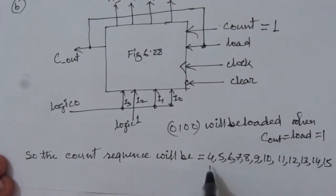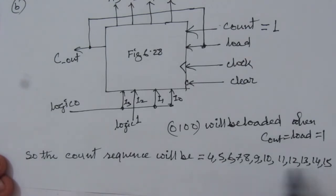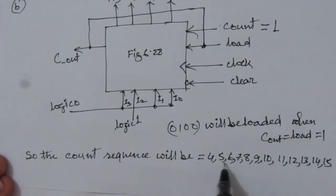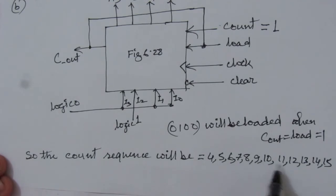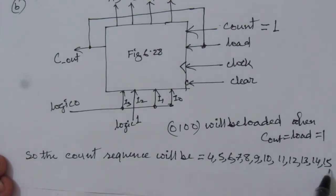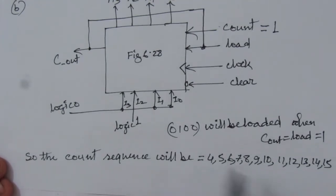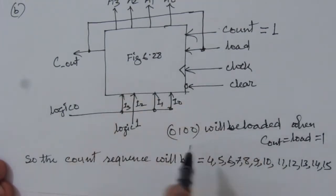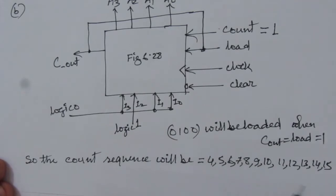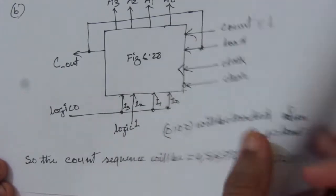So the count sequence will be: starting from 4, it counts 4, 5, 6, 7, 8, 9, 10, 11, 12, 13, 14, and 15. Whenever we have 15 at the output, the carry output will be 1, making load equal to 1, and the value 4 is again inserted. So from 4 to 15 we have 12 counts, making this a mod 12 counter. The second part of the problem is solved.